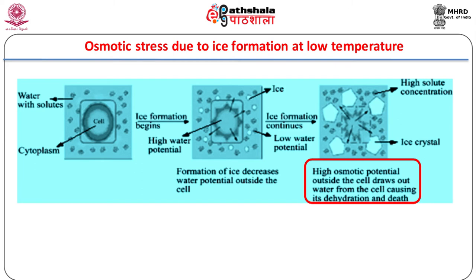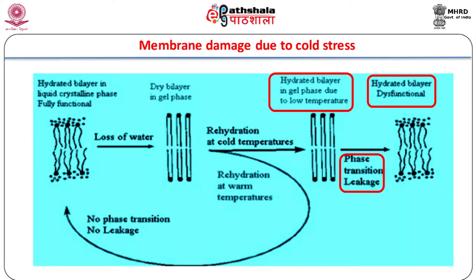Metabolic activity is arrested or reduced due to loss of enzyme activity at low temperature. Photoinhibition followed by photo oxidation, destruction of chlorophyll, and ultimately cell death is seen in leaves of chilling sensitive plants like bean, cotton, maize, rice, and tomato. Low temperature also decreases the fluidity of membrane lipids.